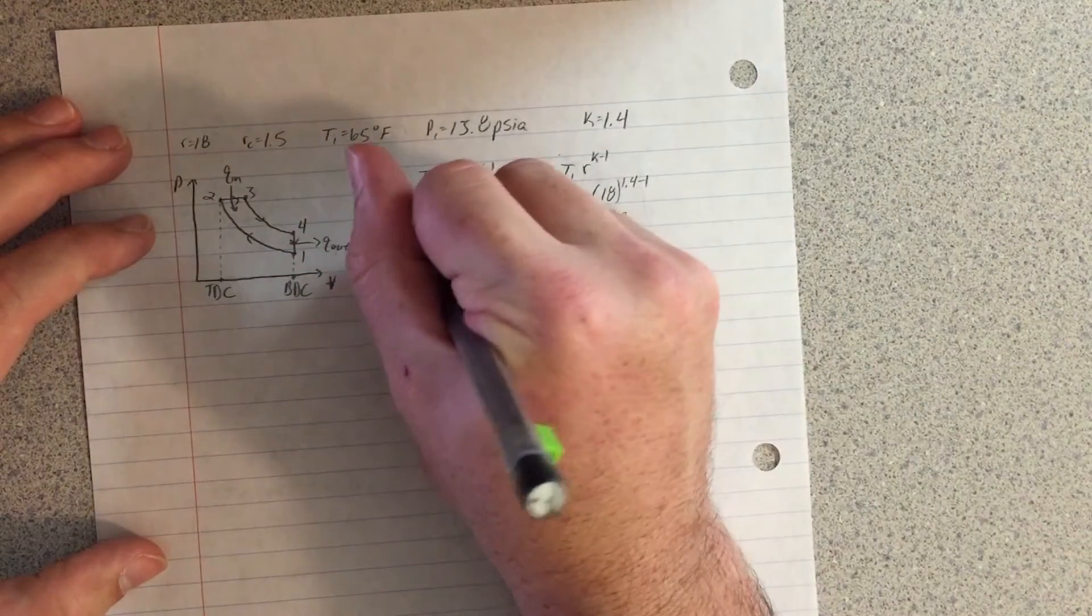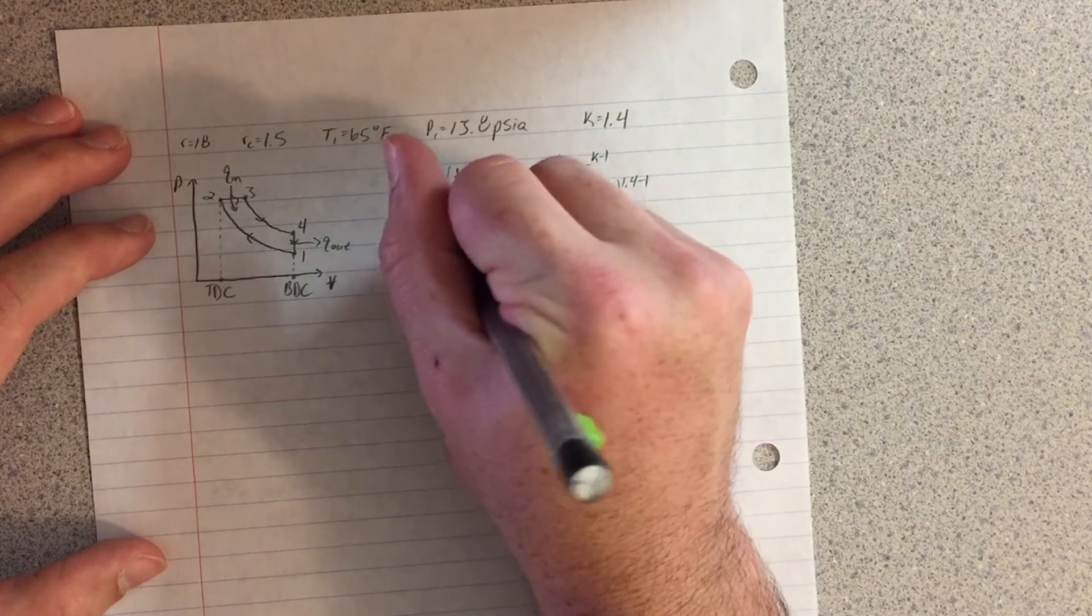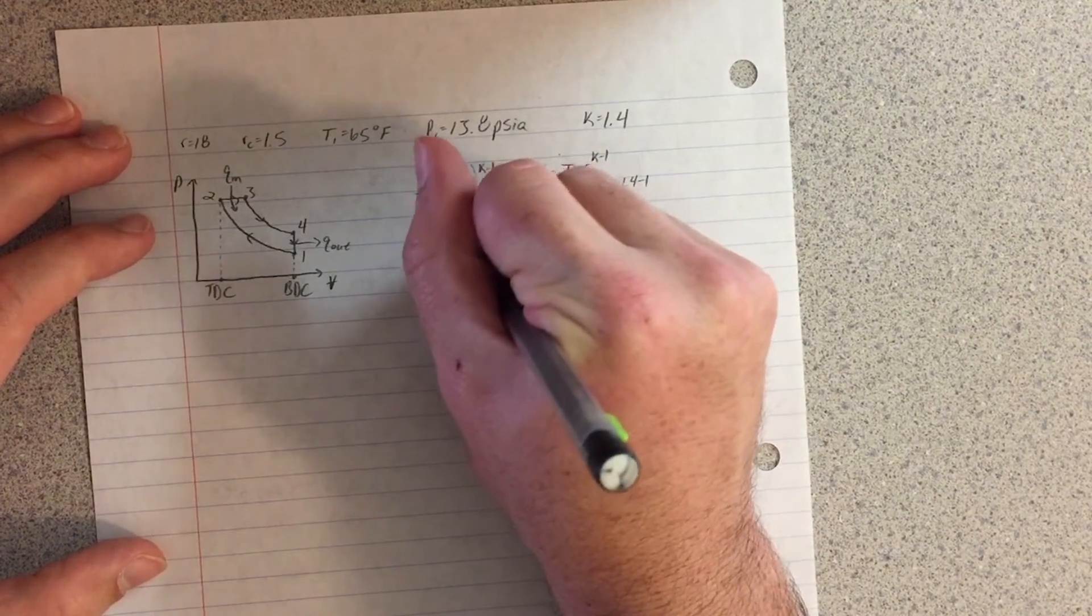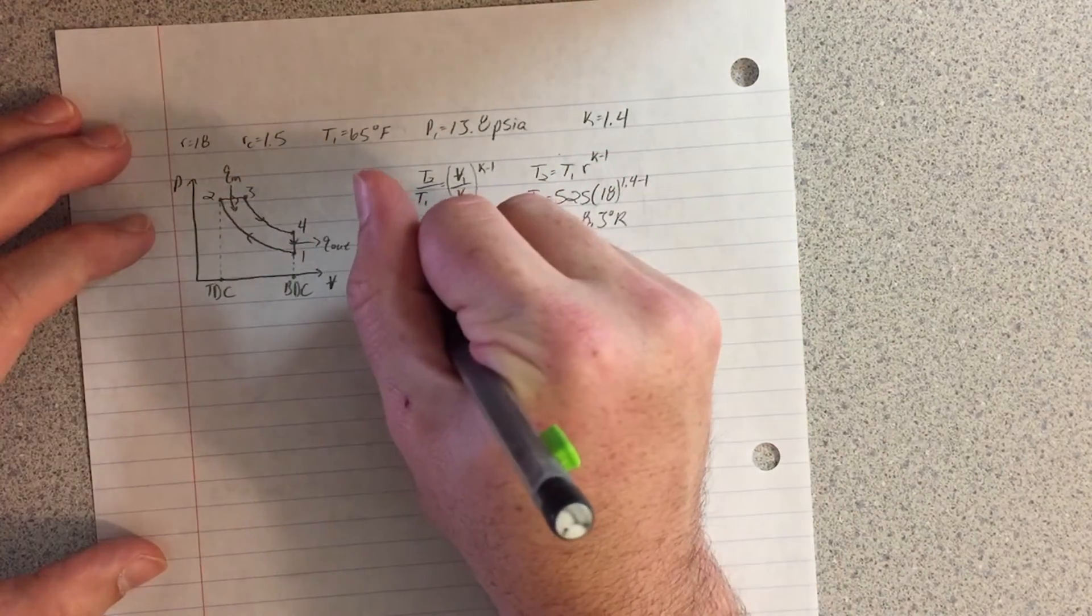Now, the maximum air temperature, T3, can be calculated using the formula T3 equals T2 times RC.